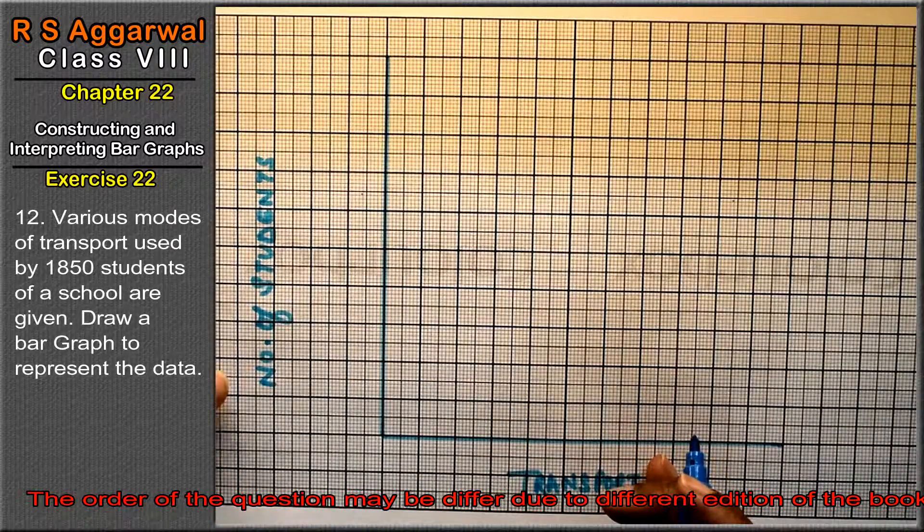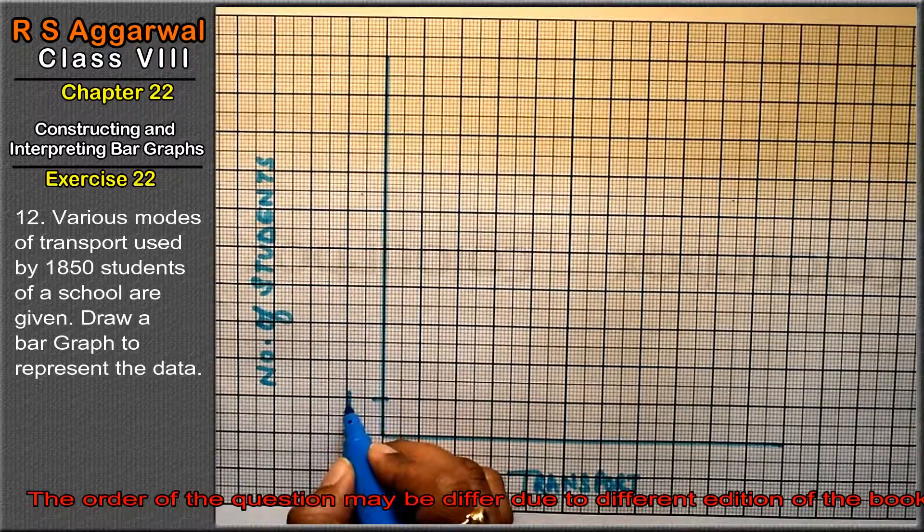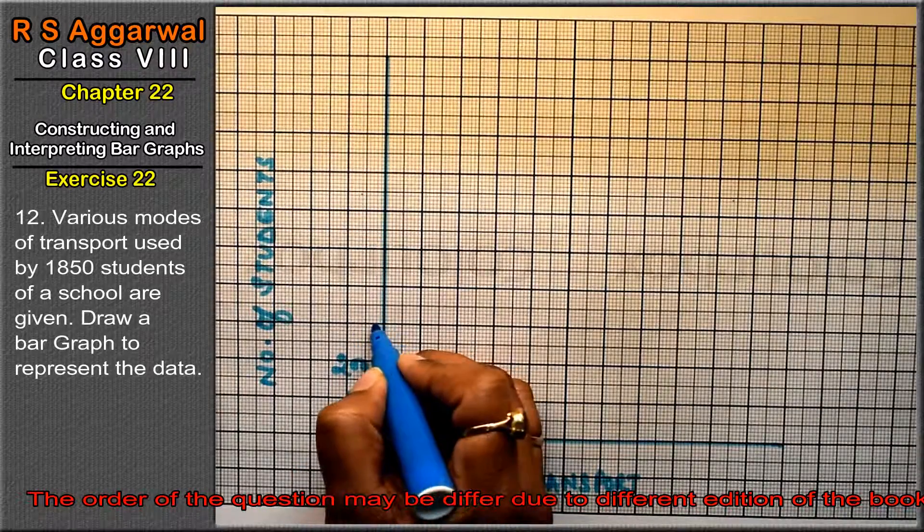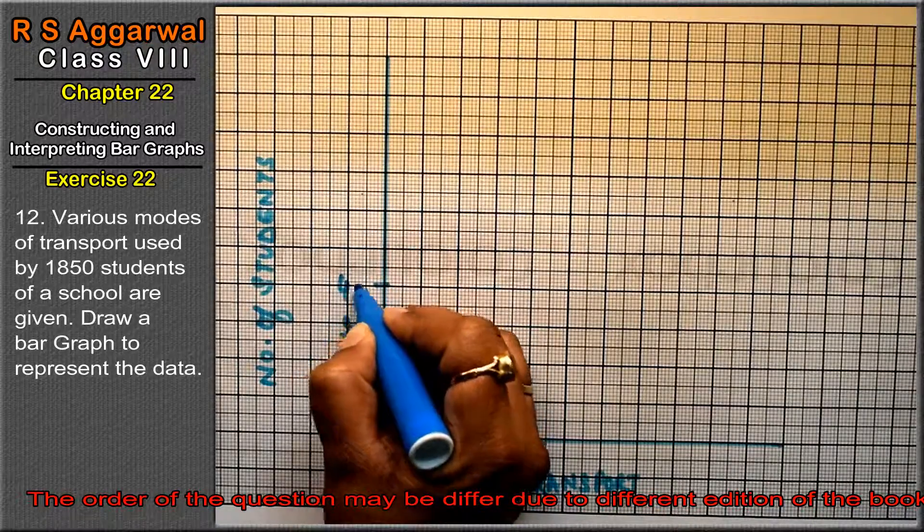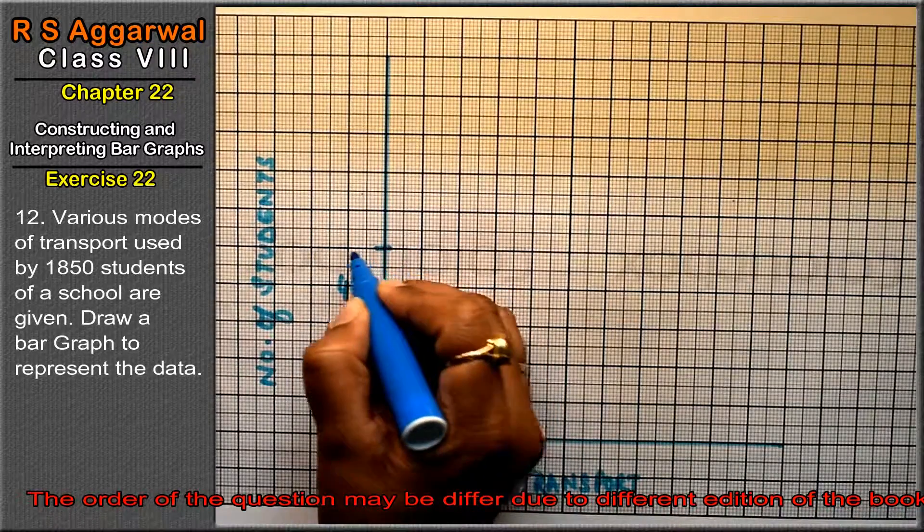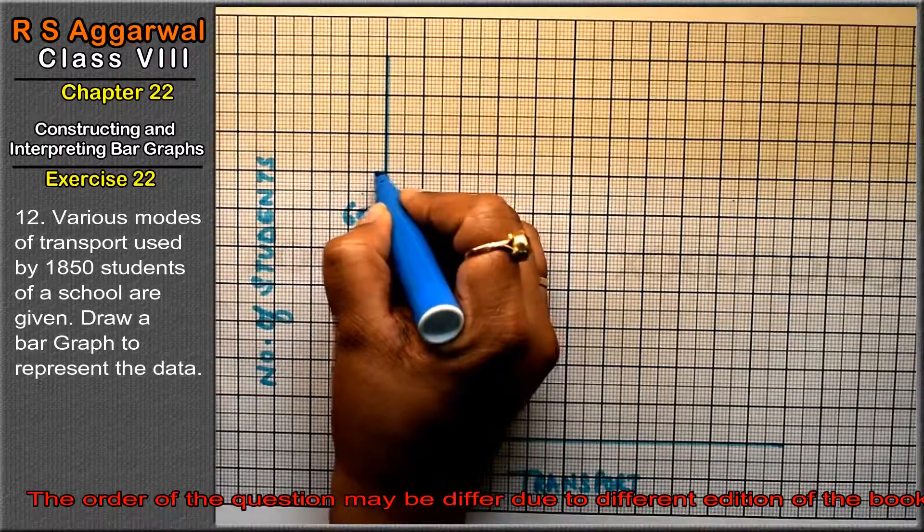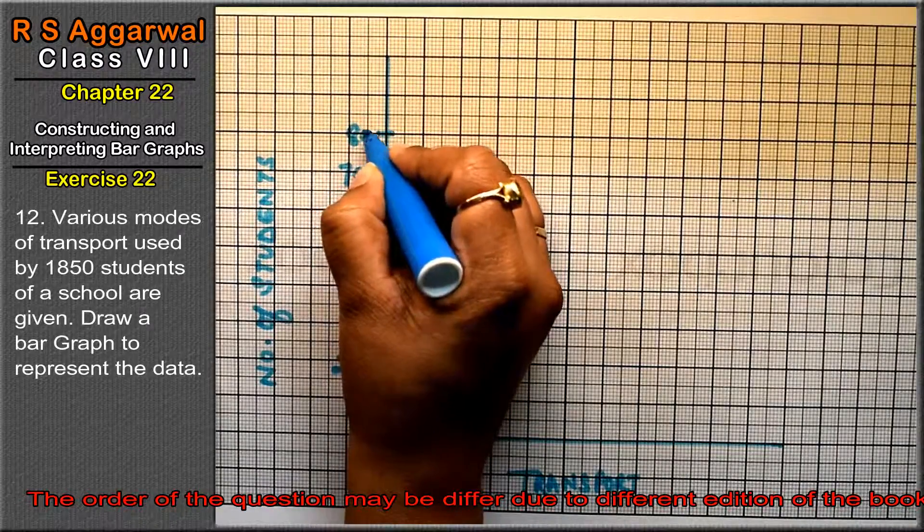Haan ek small division haamne 10 liya tha. Toh hamara ye kitna ho gaya: 10, kitne ho gaya 100, 200, 300, 400, 500, 600, 700 and 800, right?